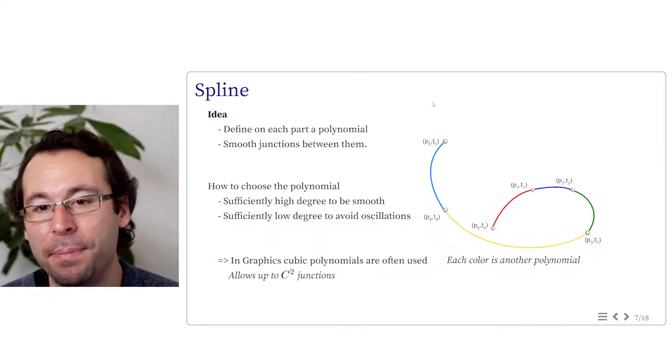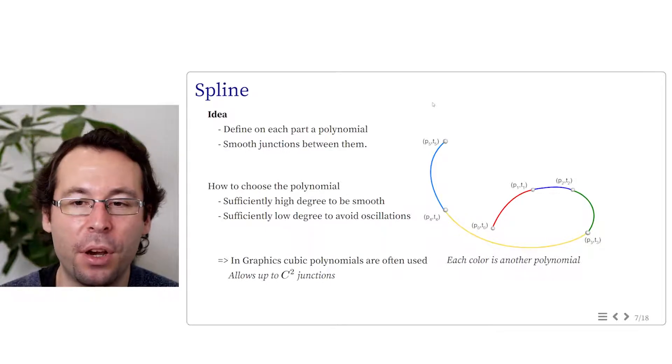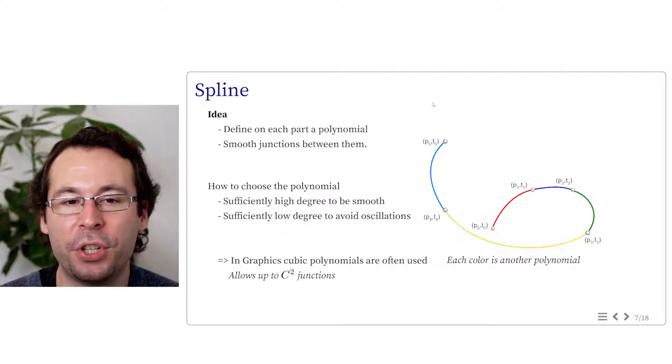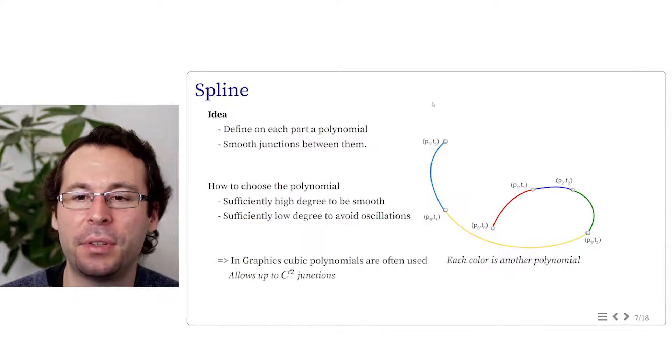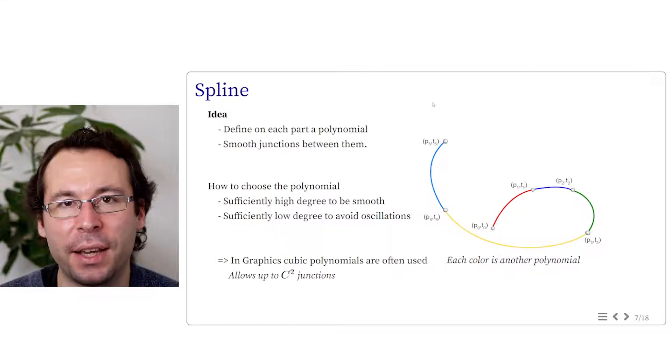So now the question is how can we define these splines? You may have seen previously in modeling class Bezier curves, B-spline curves, maybe NURBS too. And you probably know that this approach generates smooth curves. But can we use them in this context? This is actually a question we will discuss during the interactive session.